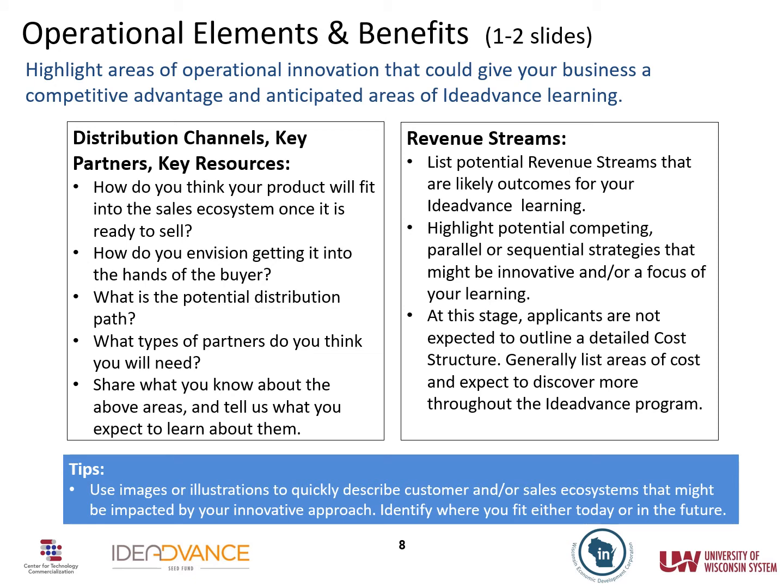A good way to approach the section on operational elements and benefits is to start with a diagram showing how you think you fit into the sales ecosystem. Imagine your product is ready to sell — what needs to happen to get it in the hands of the buyer? What do you envision the distribution path will look like? What partners do you imagine will be needed? The diagram doesn't need to be fancy. The review committee understands you don't have definitive answers right now — that's the point of the program. Be sure to call out areas of uncertainty as opportunities for IDEA Advance learning. You'll also want to cover potential revenue streams — whether transactional sales, subscriptions, licensing, or something else. Revenue streams and methods of payment can be sources of unexpected innovation in business models. What do you hope to learn about them?